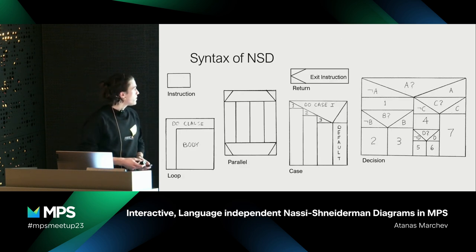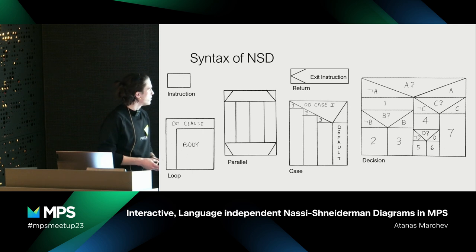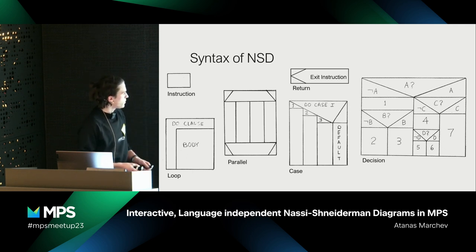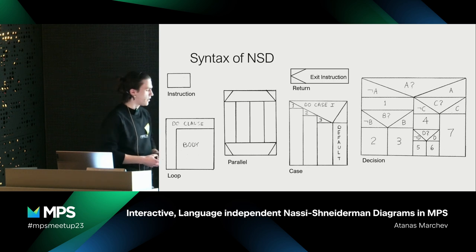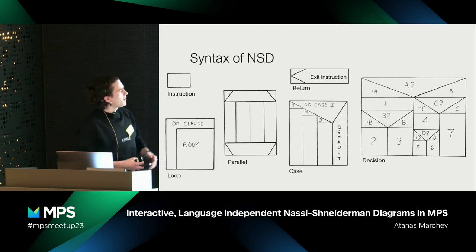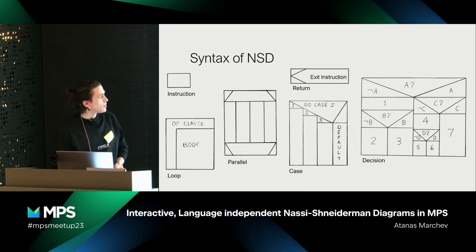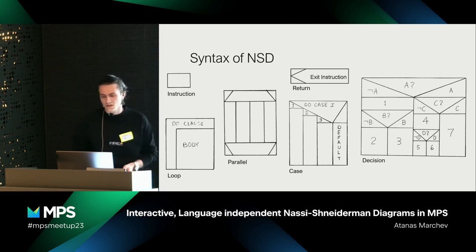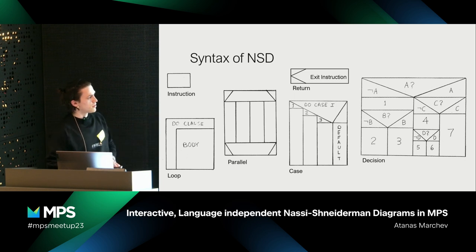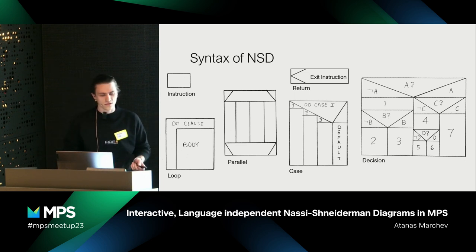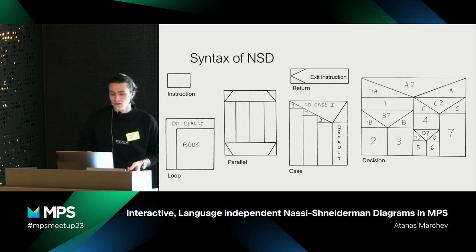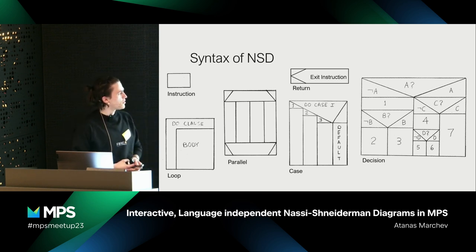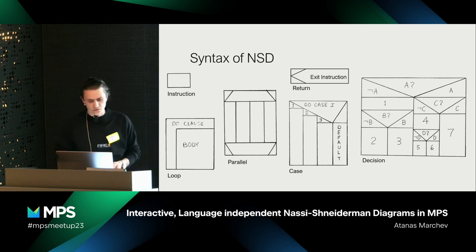This is the syntax of it. The most basic block is an instruction. We have loops — test-first loops, which are like this, and test-last loops, which are the same but with the condition below the body. We have parallel as well. We have cases which we can use for switch statements. We have returns — the return instruction actually isn't in the original white paper, and it's a good example of how the diagram is easily extendable. The last example shows a procedure that uses a lot of decisions, which we can use for if-statements.